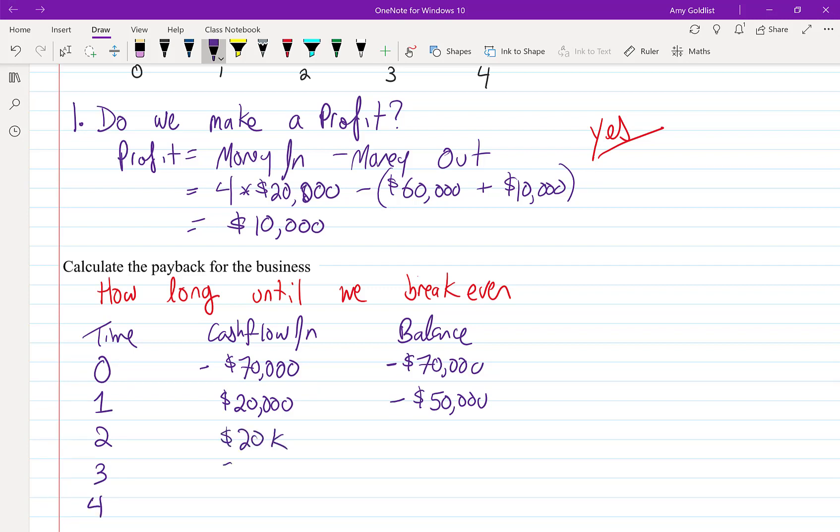I'm going to put a 'k' for thousand just because why not. Noting that at the end of Year 2 we have -$30,000, at the end of Year 3 we've got -$10,000, and then finally by the end of Year 4...